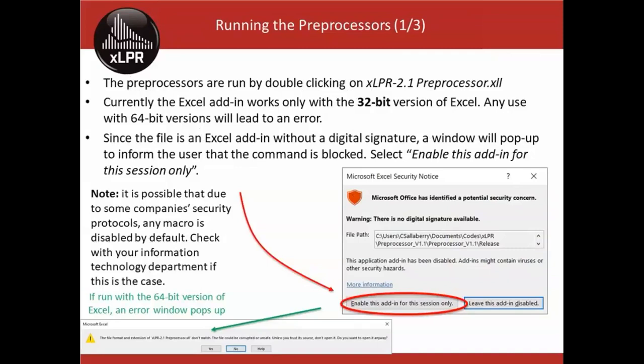What these pre-processors do is create lookup tables as a function of the inputs. GoldSim then linearly interpolates from these tables during the simulation, which is much faster than calling the calculation at every time step. The purpose of the pre-processor is simply to speed up XLPR. The pre-processors are accessible via the Excel add-in — the second Excel file in the XLPR main folder, called XLPR-2.1 Preprocessor.xla. This add-in works only with the 32-bit version of Excel.